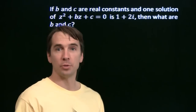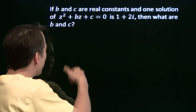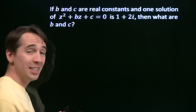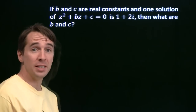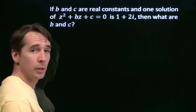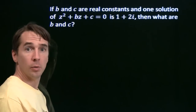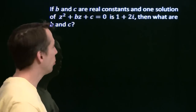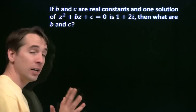I have a couple of quadratic problems for you. Here's the first one. There's the quadratic, z squared plus bz plus c equals zero. What are b and c? That's what we have to figure out.